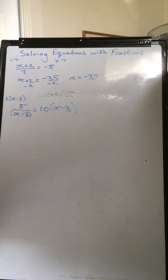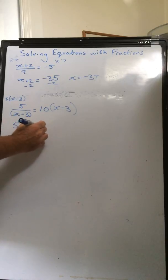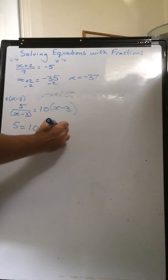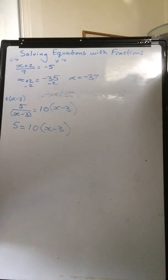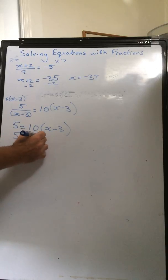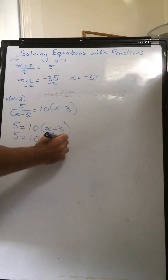Wonderful. You can now see these two x minus 3s are going to cancel each other out. So now we're left with 5 equals 10 brackets x minus 3. Now we're going to expand the bracket. So 5 equals 10x minus 30.